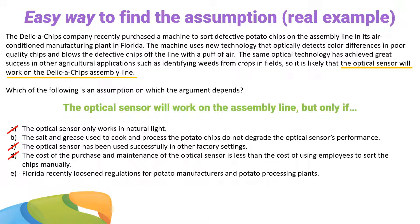Let's take a look at E: but only if Florida recently loosened regulations for potato manufacturers and potato processing plants. E is also out of scope — we're only interested in whether the optical sensor will work on the potato chip line; we don't care about regulations. Maybe we would if they mentioned very specific regulations about using optical sensors on potato chip lines, but they don't. So E is out of scope. That means B is our correct answer.